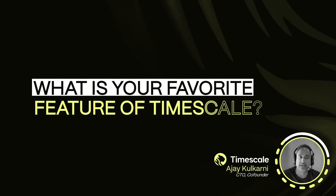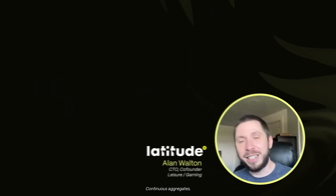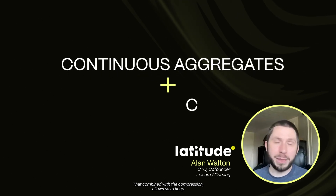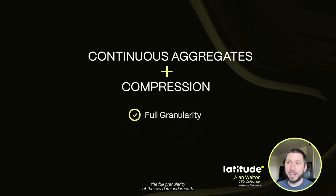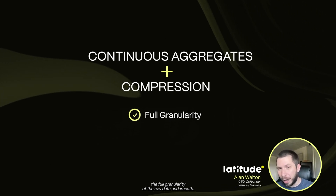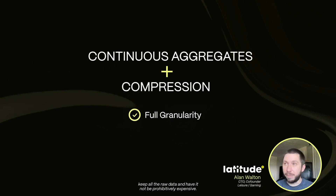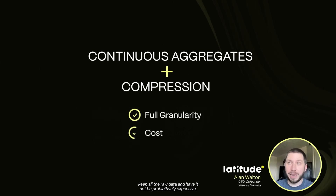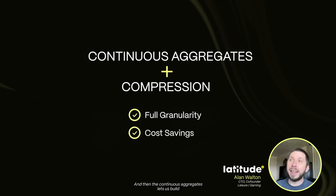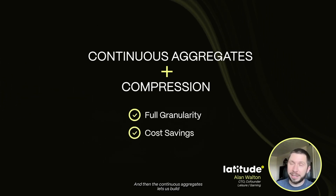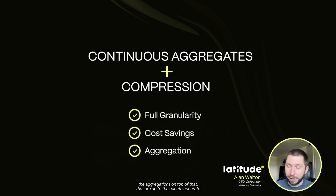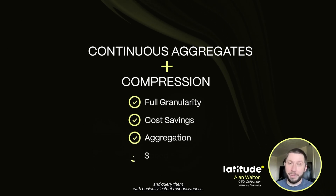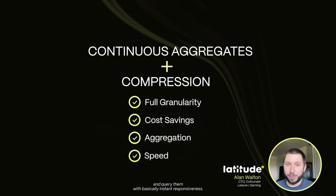What's your favorite feature about Timescale? Continuous aggregates. That combined with the compression allows us to keep the full granularity of the raw data underneath. The compression lets us keep all the raw data and have it not be prohibitively expensive, and then the continuous aggregates lets us build aggregations on top of that, that are up to the minute accurate and query them with basically instant responsiveness.